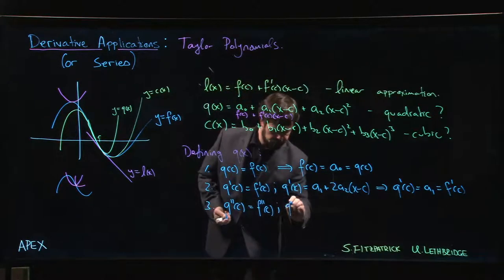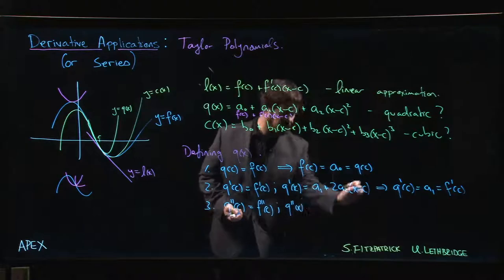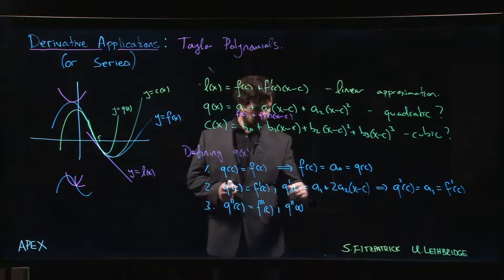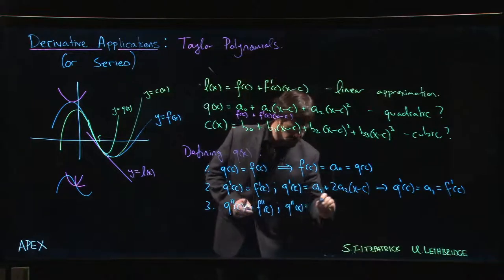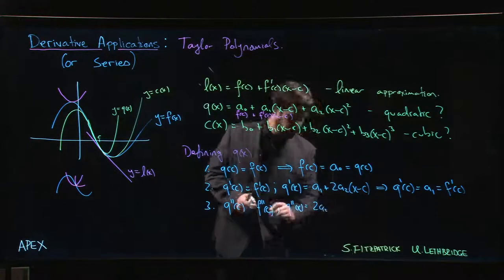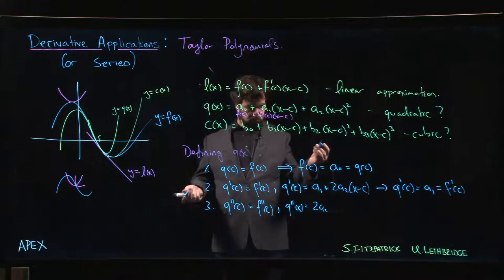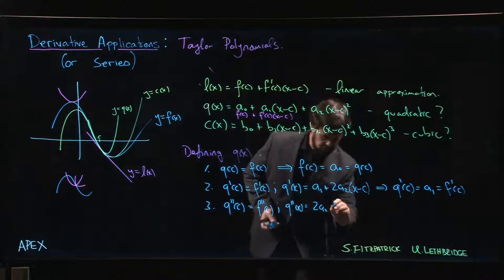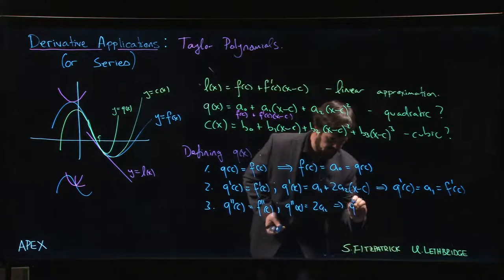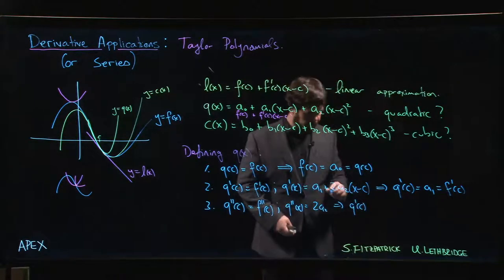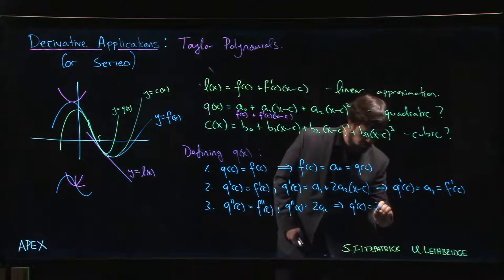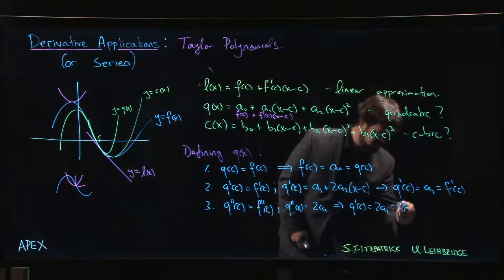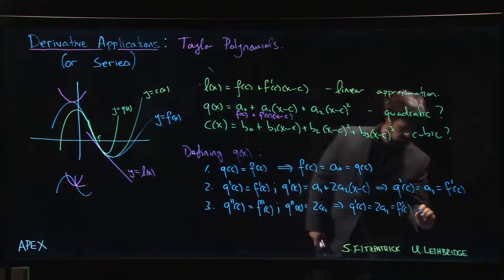And what's Q double prime? Well, we just take the derivative here. That's a constant, it goes away. The constant term always disappears, and we have 2a₂, well, times 1. Okay, so this, of course that's a constant, so that's also the value of Q double prime of c. So Q double prime of c is 2a₂, and we want that to equal F double prime of c. And that means that a₂, we have to divide by 2.